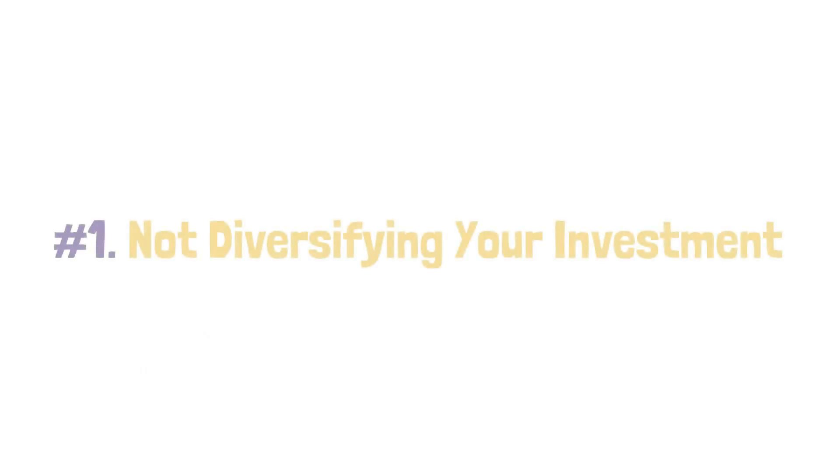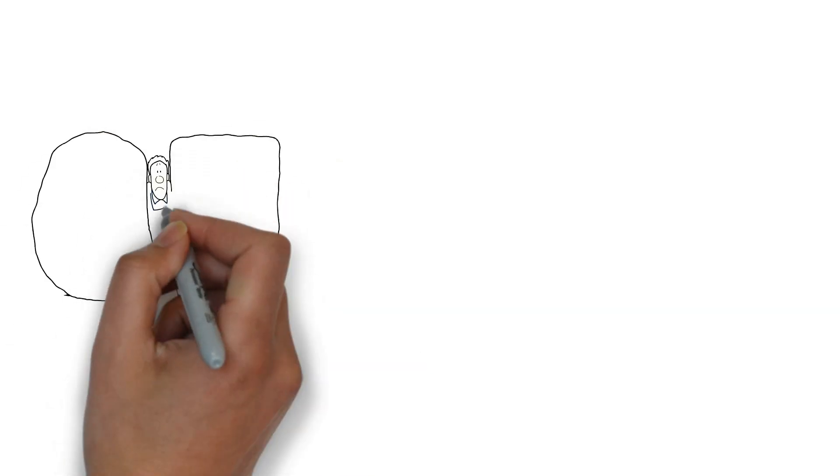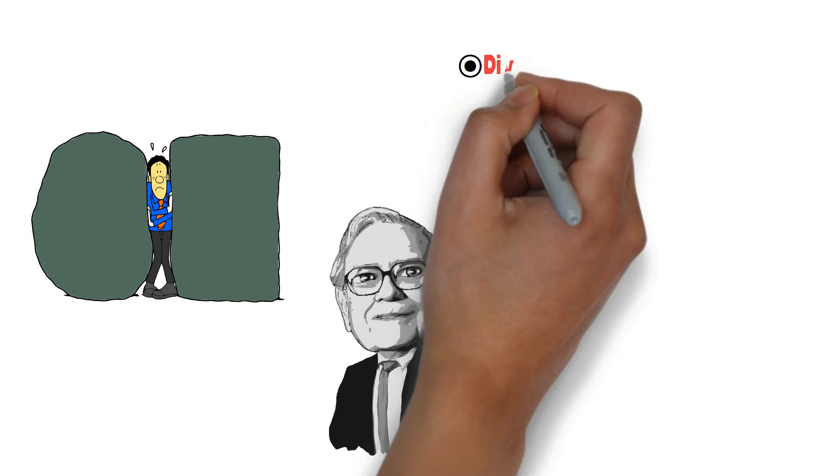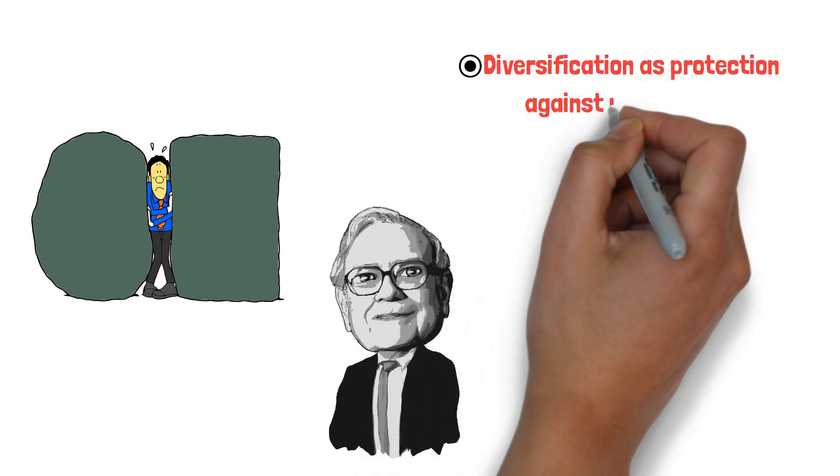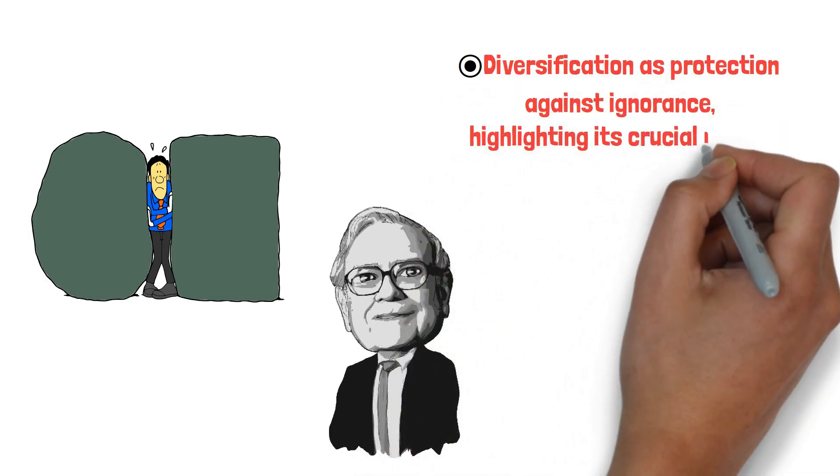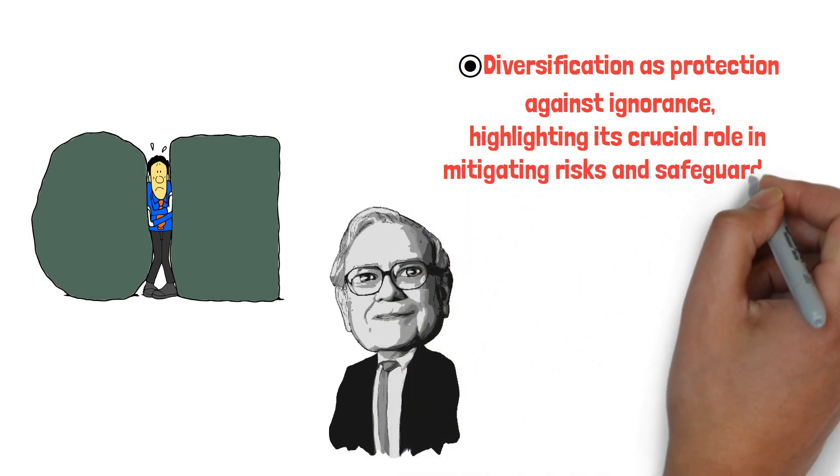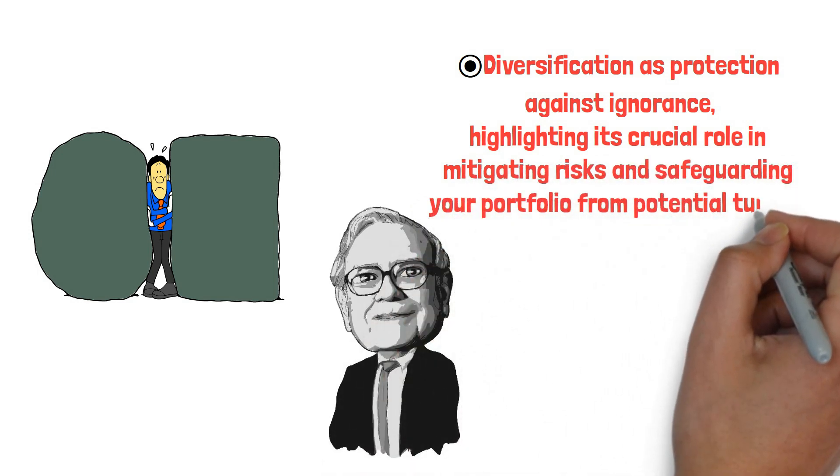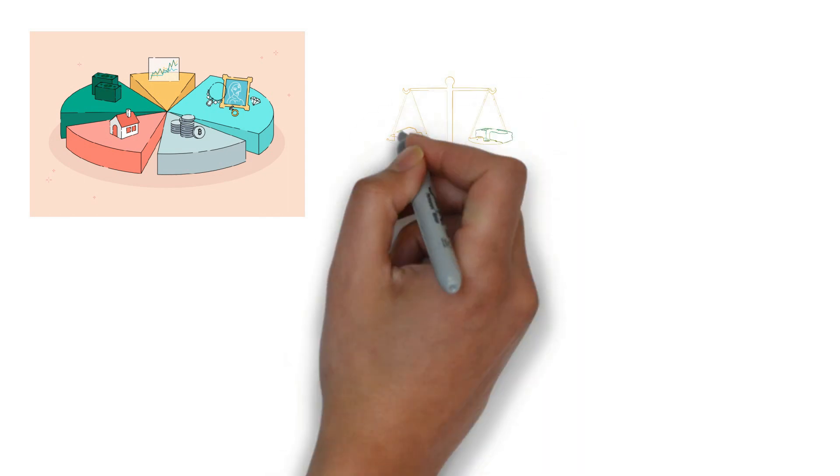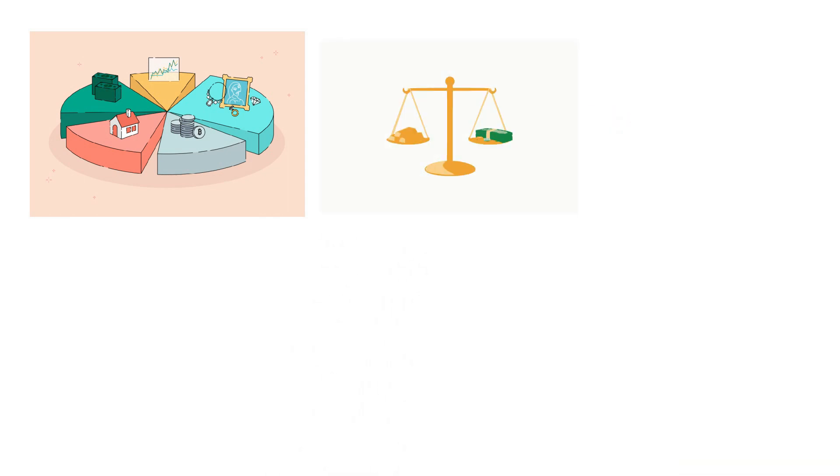Number 1: Not diversifying your investments. Failing to diversify your investments can have severe consequences. Warren Buffett described diversification as protection against ignorance, highlighting its crucial role in mitigating risks and safeguarding your portfolio from potential turmoil. By spreading your investments across various asset classes, industries, and geographical regions, you can effectively balance losses in one area with gains in another.